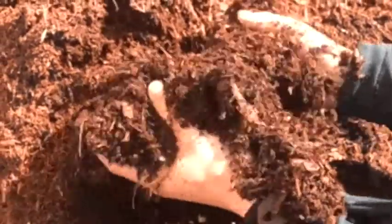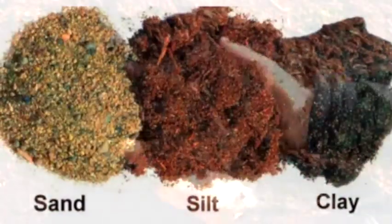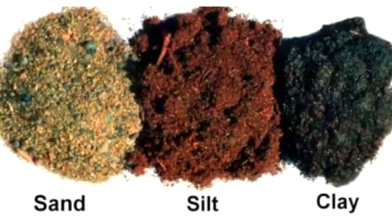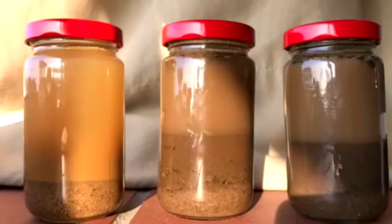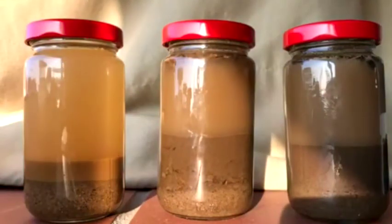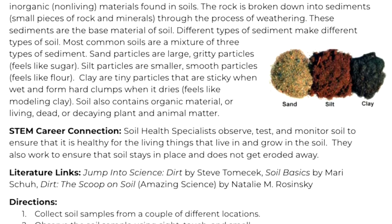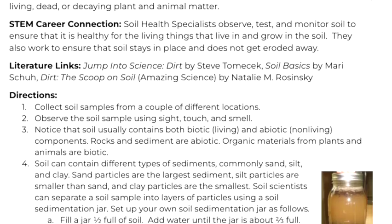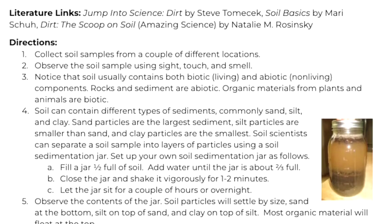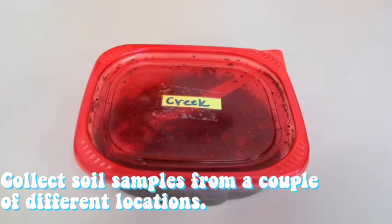Soil is made up of a mixture of sediments, most commonly sand, silt, and clay. Soil scientists are able to use a sedimentation jar to separate the sediments found within a soil sample. To learn more about soil and the content behind today's STEM quick win, check out our activity sheet linked down below.